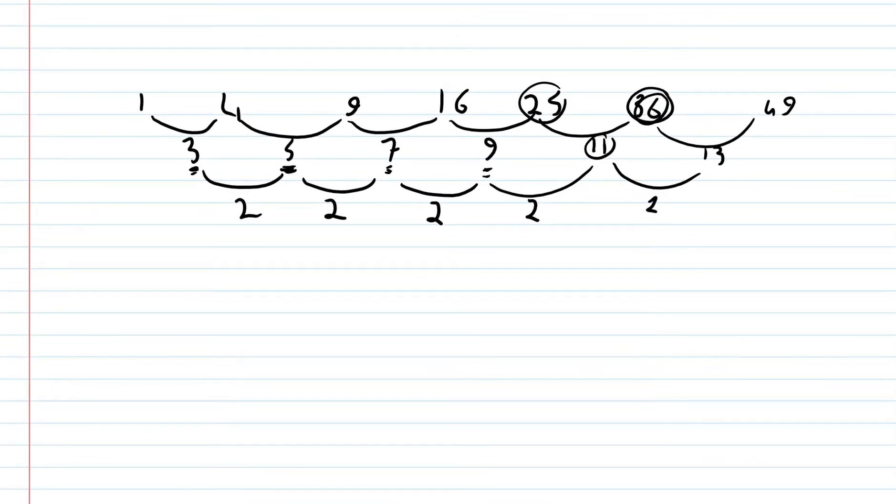We could have another type of pattern might be, let's say, 4, 8, 16, 32, 64. What's happening here? Well, it's doubling, isn't it? 4 to 8, and then 2 8's are 16, and then 2 16's are 32.